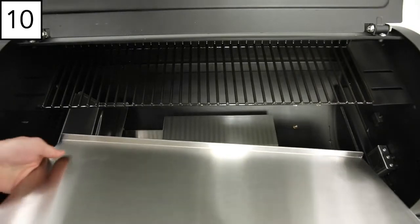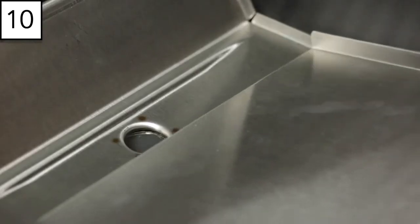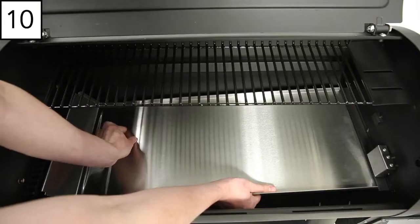Step 10. Insert the grease tray. Secure onto the lip inside the cook box by aligning the notches on the grease tray with the front and back of the lip.